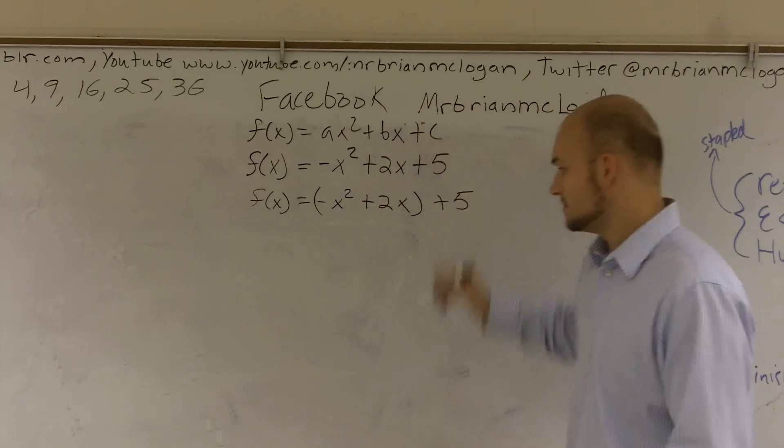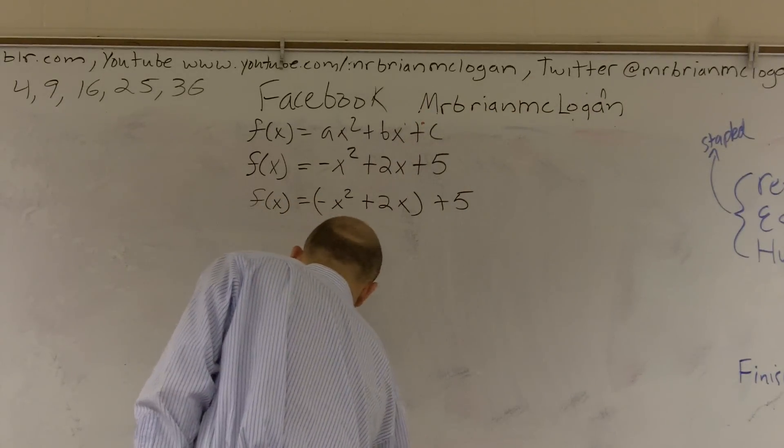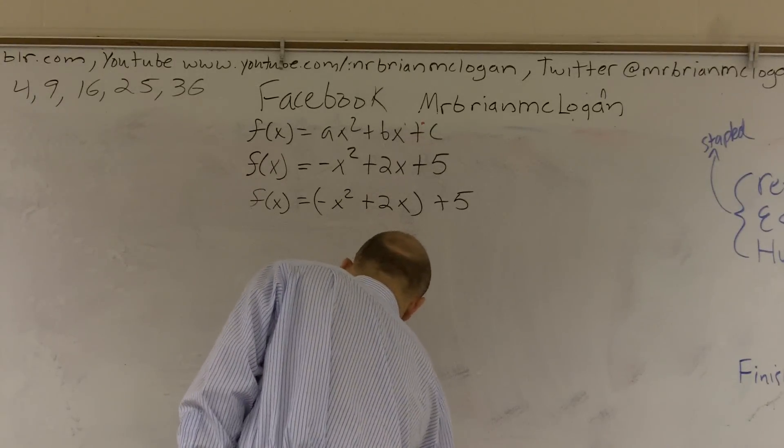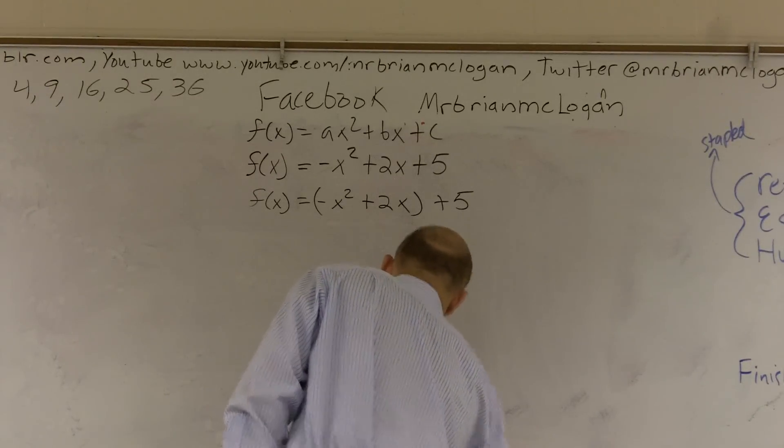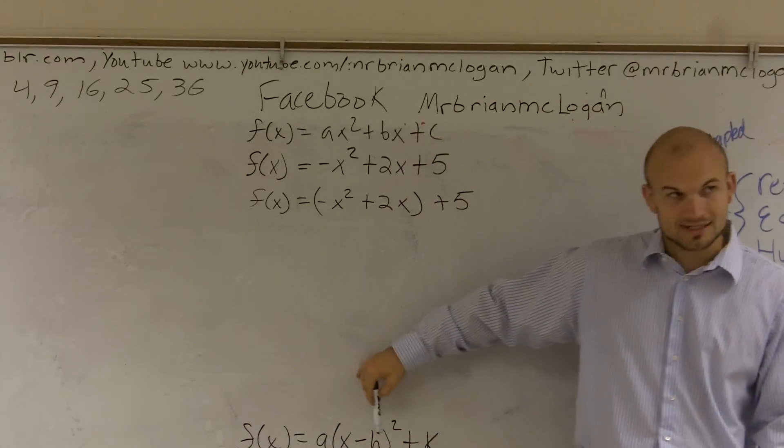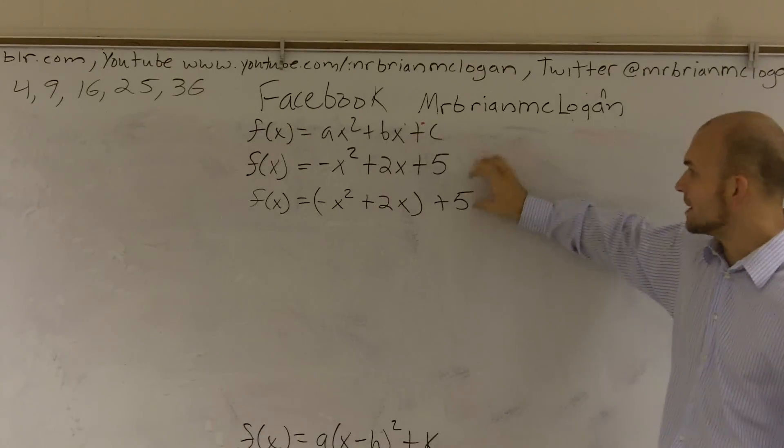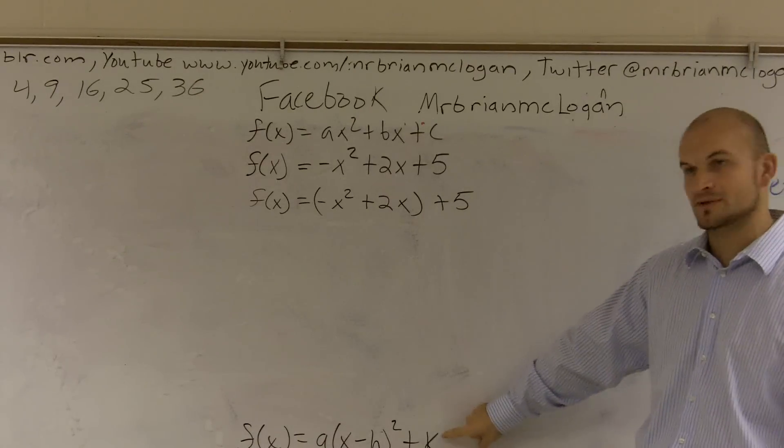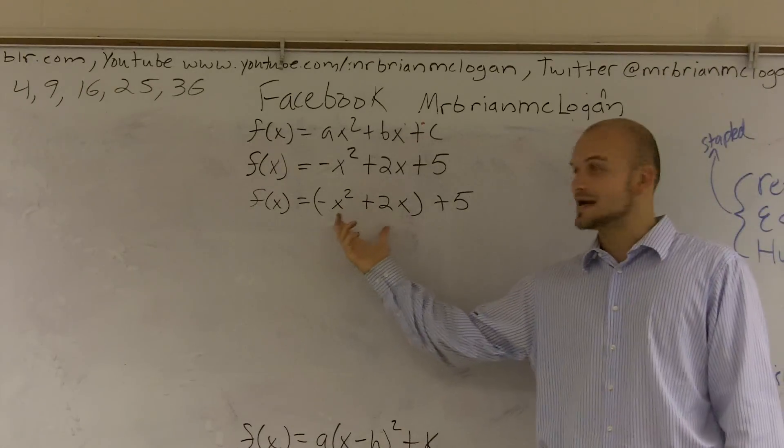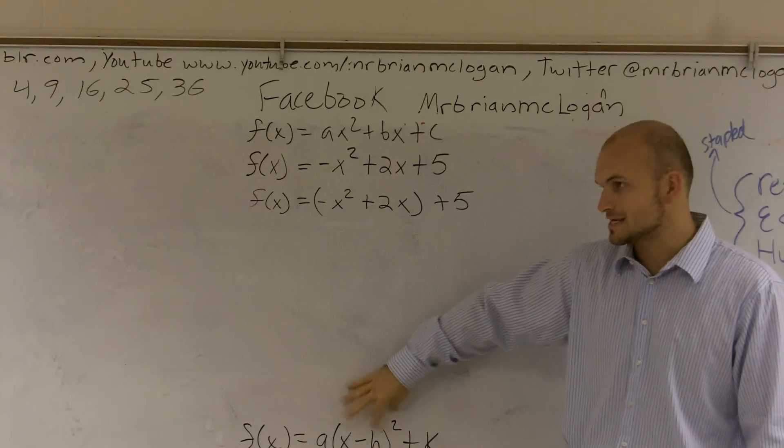We want to go from this form down to this form, right? So what we want to do is we need to get an x minus h, and we need to get that squared. So I'm not concerned about this k right here. This k is just going to be, or this number, is just going to be on the outside. But with these x's, I want to convert them from an x squared and an x to this little x minus h squared.